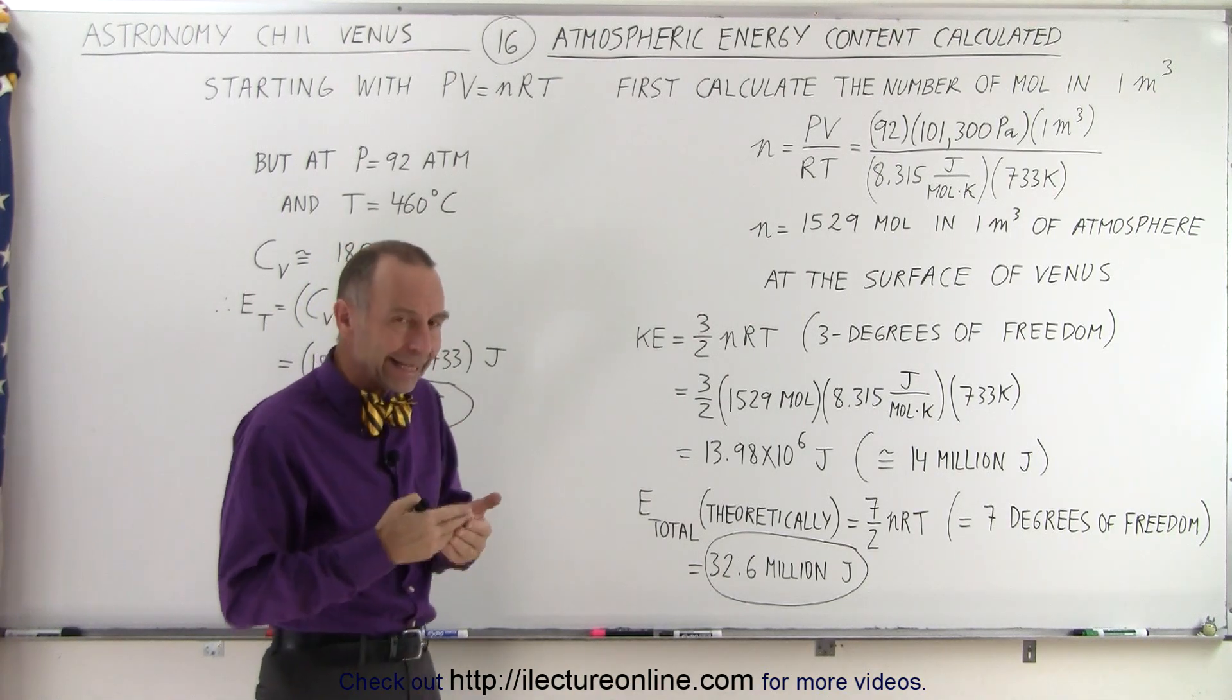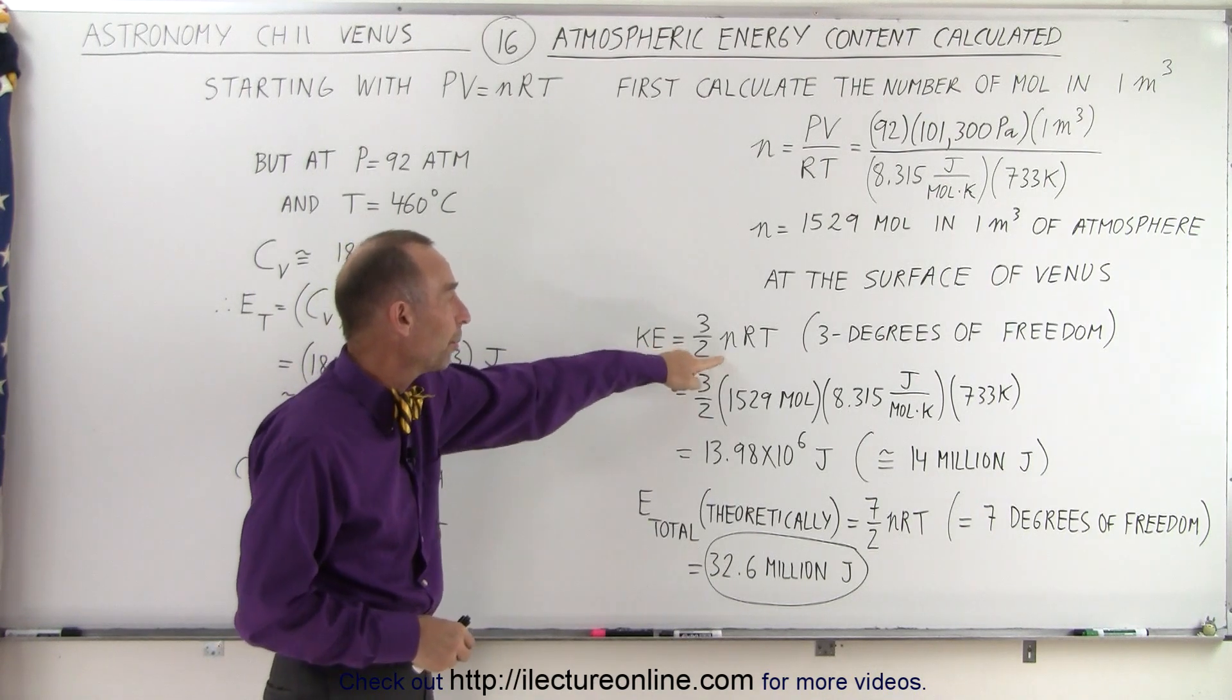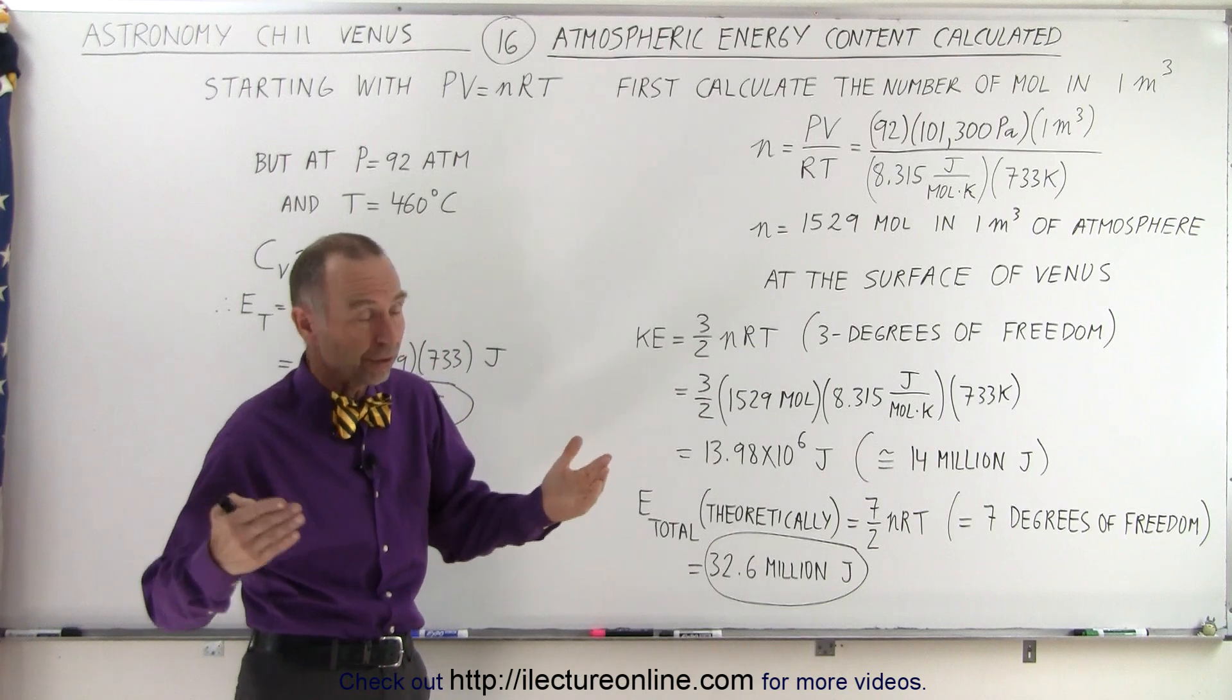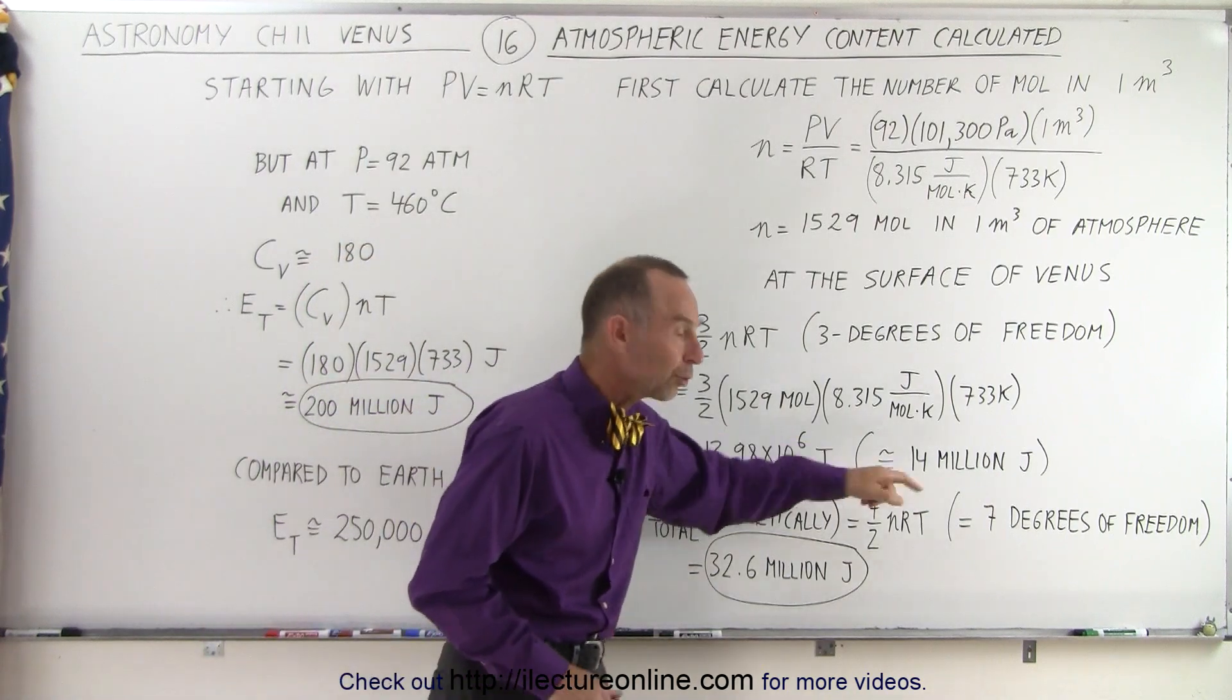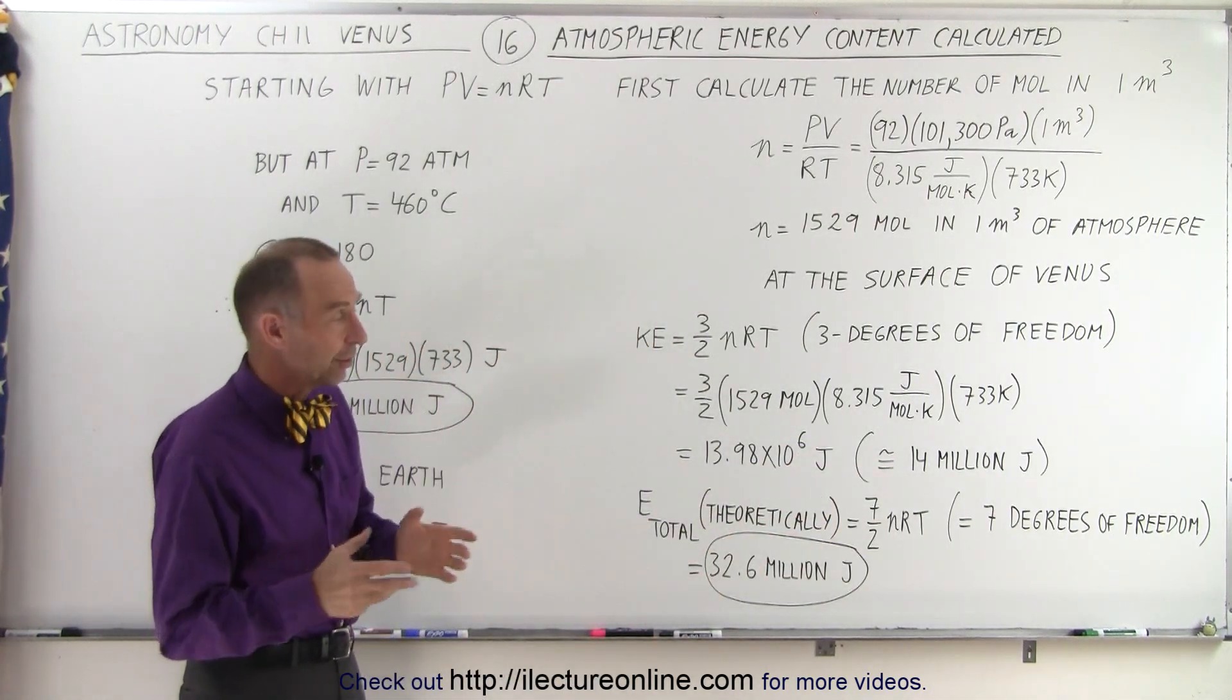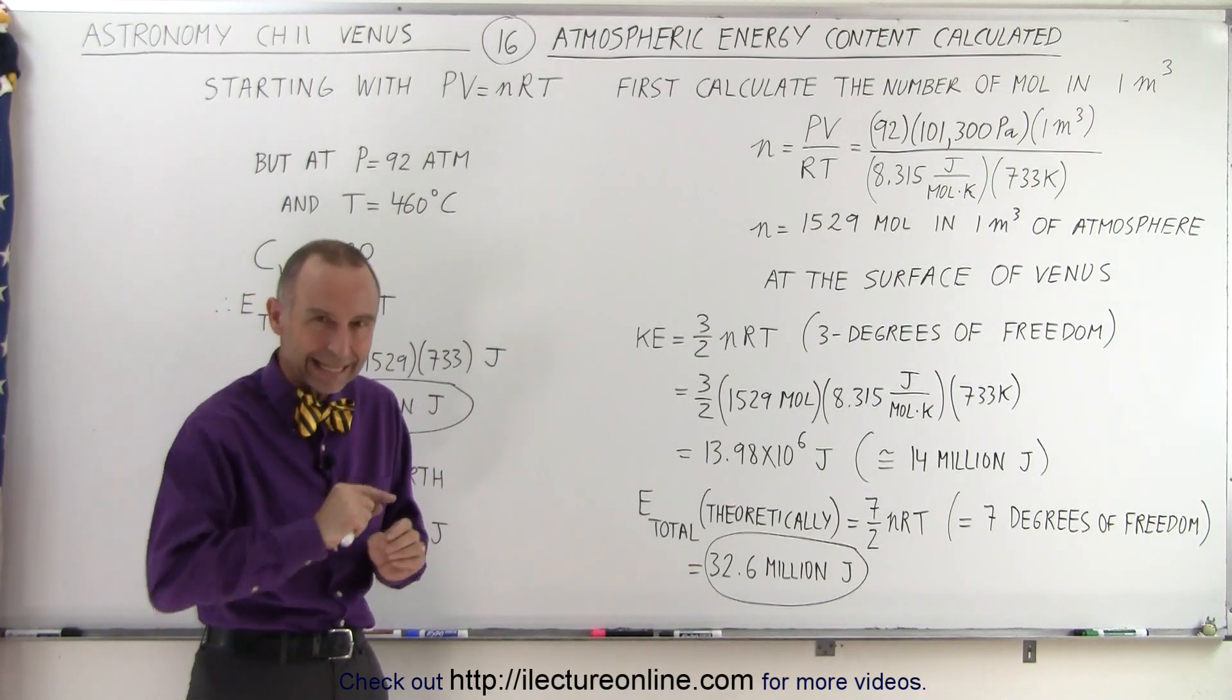So then we realize that the kinetic energy of a gas can be calculated by taking three halves the number of moles times the gas constant times the temperature. There's three degrees of freedom: x direction, y direction, z direction. So when we calculate that, we see that there's about 14 million joules in a cubic meter of atmosphere on Venus, on the surface of Venus, when we're only taking into account the kinetic energy.